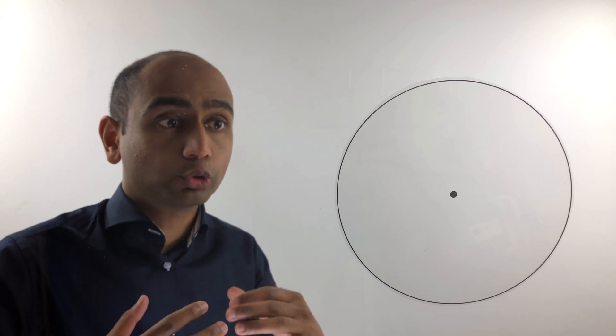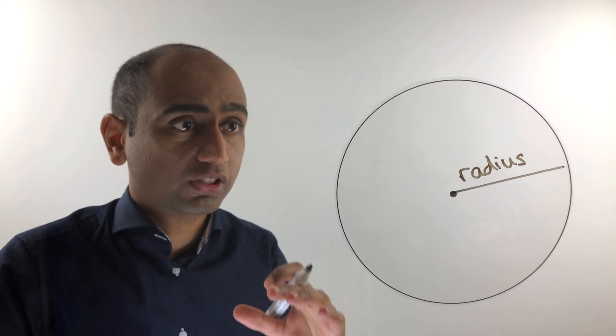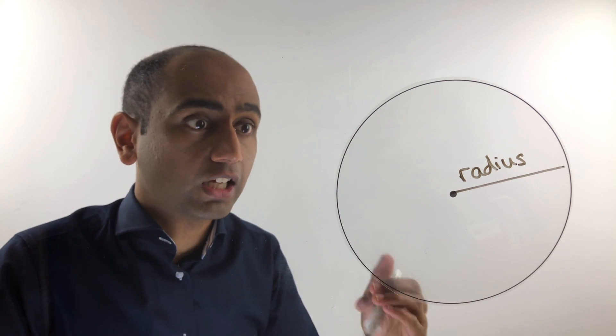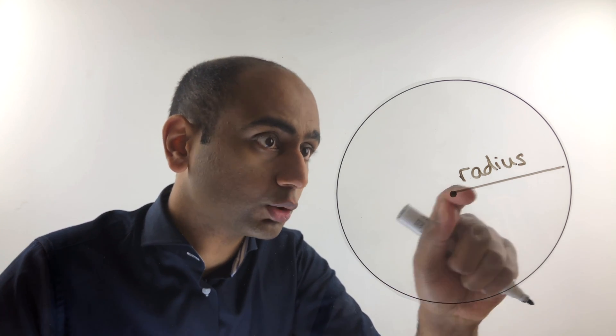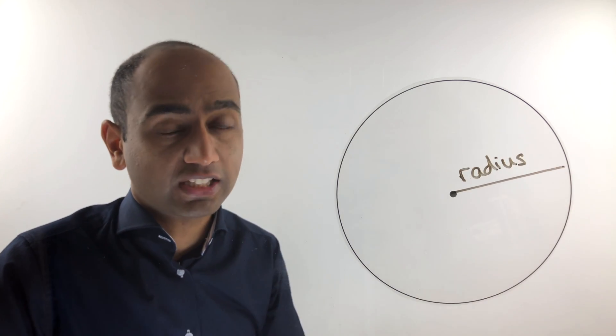Now there are several key words that we need to know about when it comes to circles. One of the most important key words is radius. A radius is simply a line that joins the centre of the circle to the edge. So this is a radius for this circle.